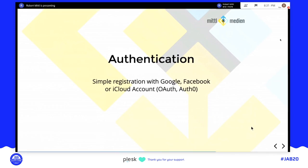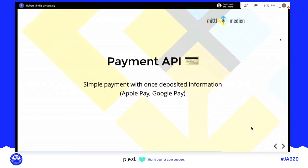If you're planning a PWA or mobile app, it's good to add authentication possibilities — OAuth with Google, Facebook, or iCloud accounts makes it easy for users to log in. The same applies to the Payment API: if you use Safari, you can quickly pay for your order without having to find a credit card — similar to Apple Pay.